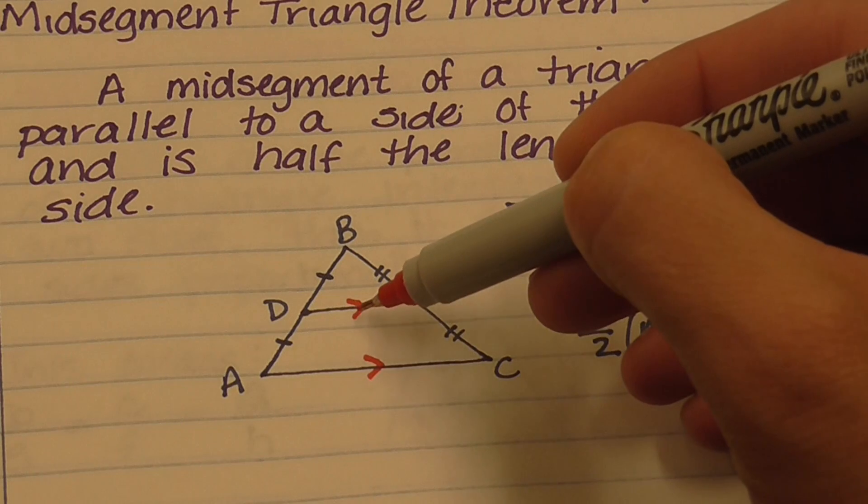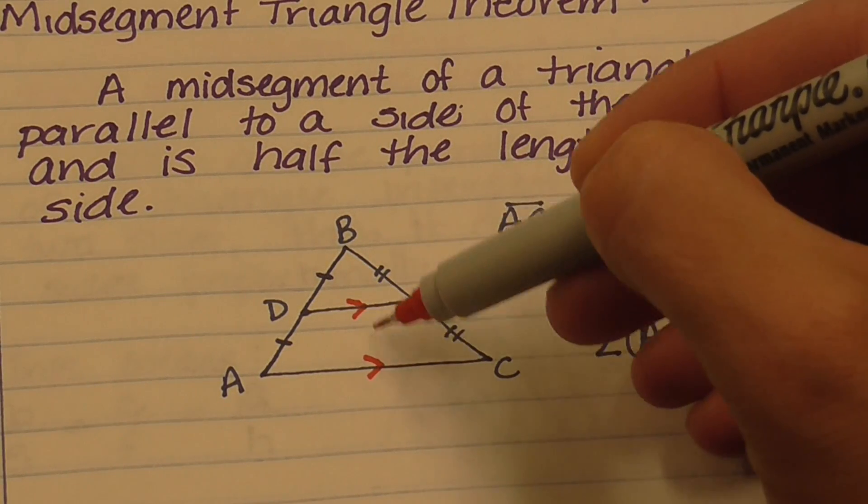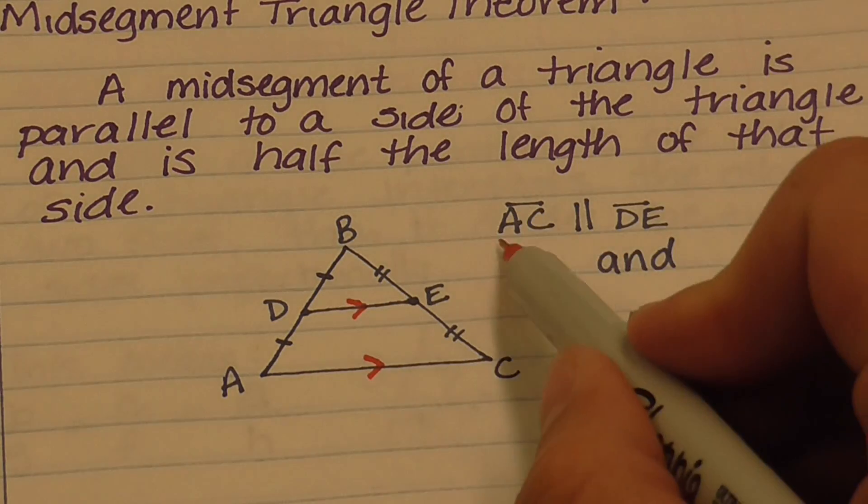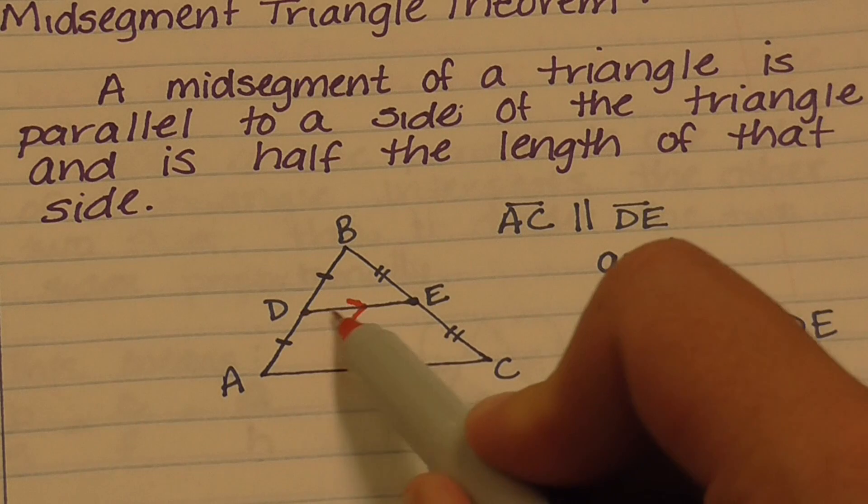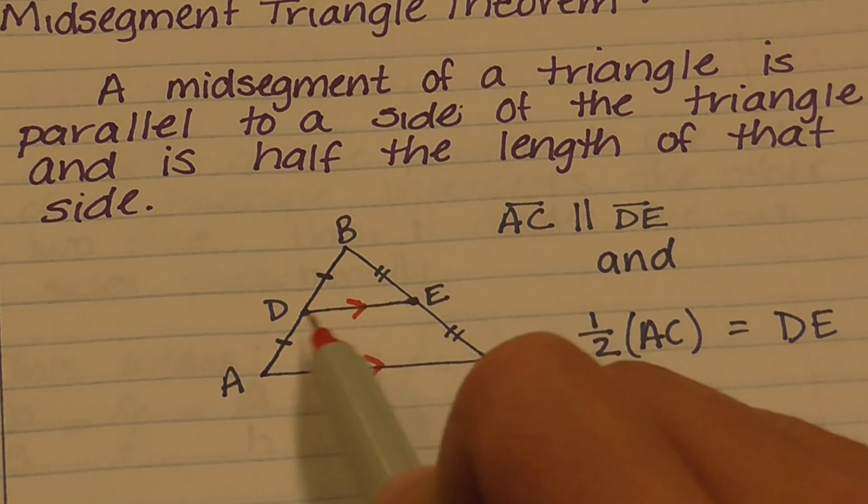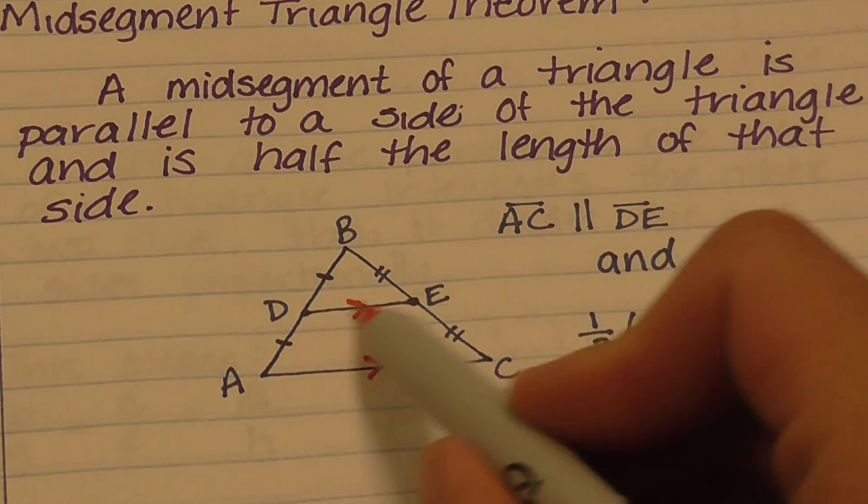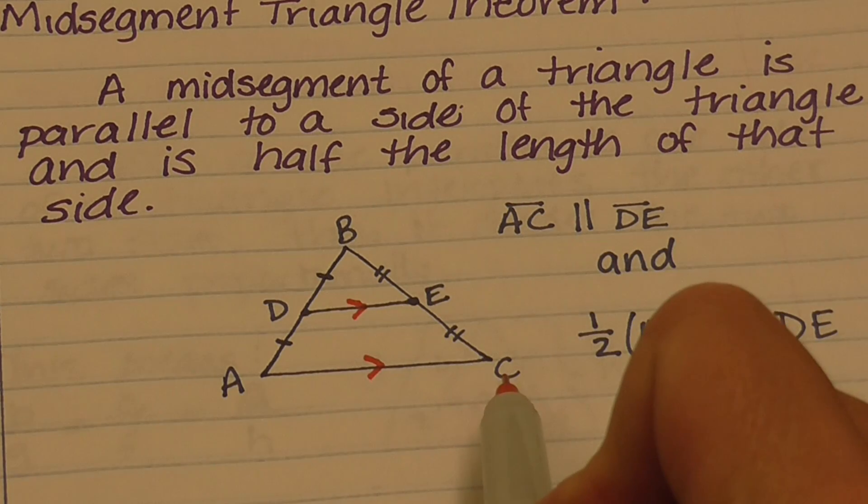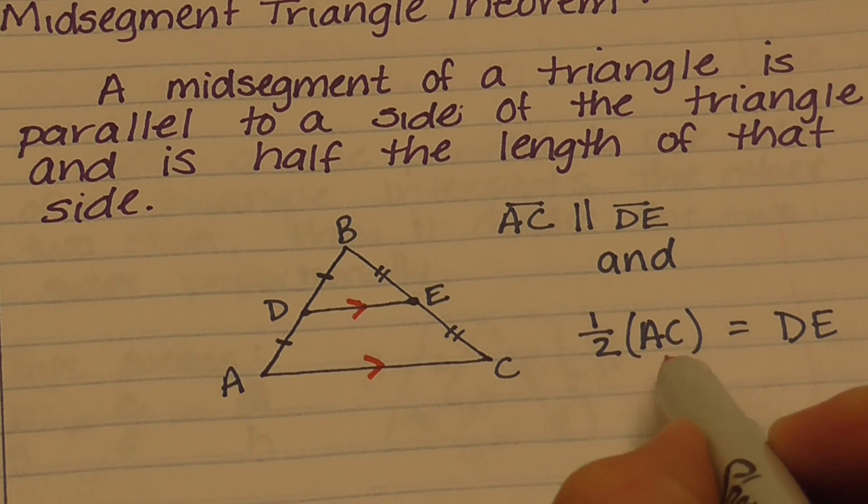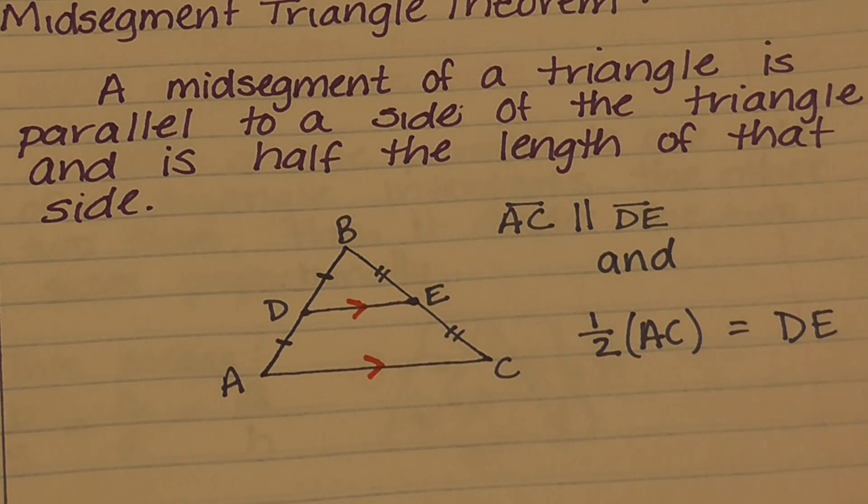If it is a mid-segment, these two lines are parallel. So that's where the theorem comes in. This is a mid-segment, AC is parallel to DE. Additionally, DE is half the length of AC. So one half times the length of AC equals the length of DE.